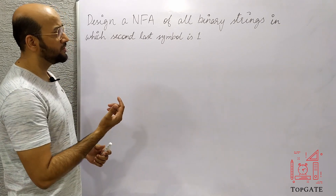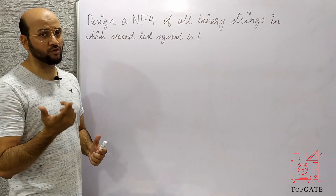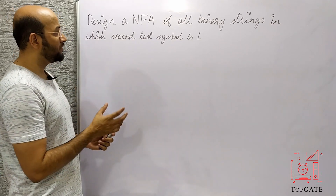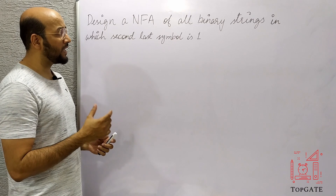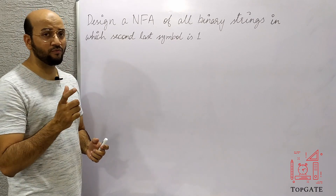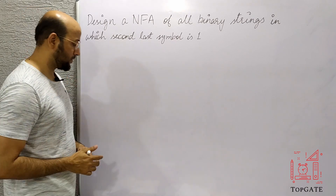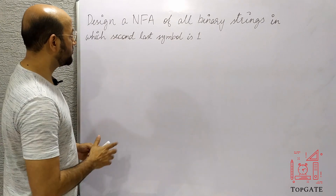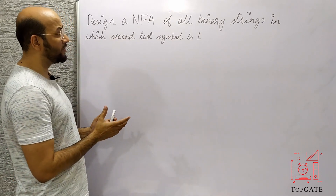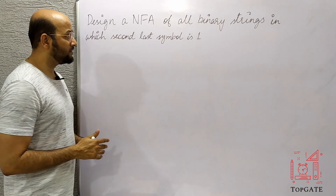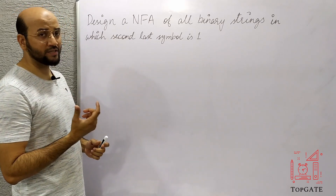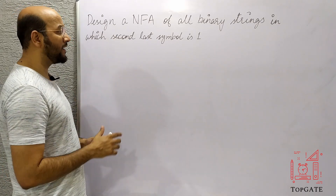Binary strings means the input alphabet is 0 and 1. We have to see that the second last symbol of every string should be 1. Before designing the NFA, let's try to understand what kind of language this is and what is the minimum string in this case, and then we'll design an NFA.